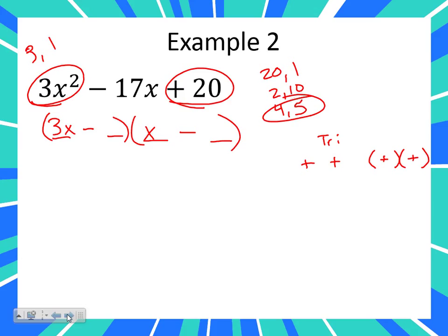So you may want to write this down. This one has a negative in the middle and a positive at the end. I'm going to put an M here for the middle term and an L here for the last term. What will multiply to be a positive but add to be a negative? What will the two binomials need to be? Negative, negative. A negative times a negative is a positive, but when you add two negatives you get a negative.